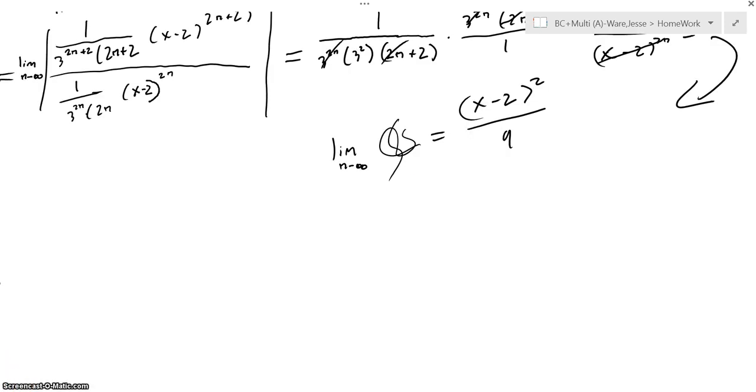Going back to what we were originally doing, we want to know when the limit l is less than 1. And we can find that by just solving. So, essentially, we have 9, which is a constant. So, the only thing we're ever changing is the top. So, when is the limit less than 1, is when the absolute value of x minus 2 is less than 3.